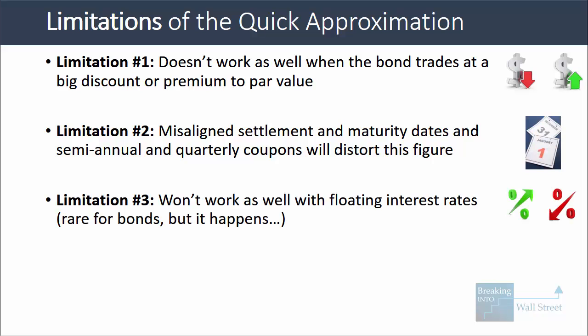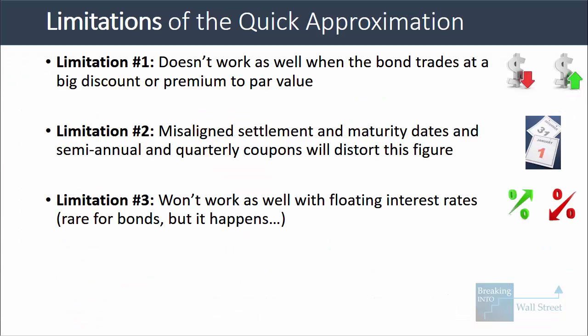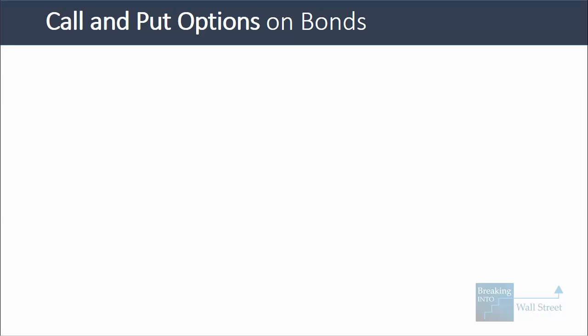One final limitation is if the bond has a floating interest rate rather than a fixed rate. So if instead of 5% we had LIBOR plus 3% or the US Treasury rate plus 1%, and the interest rate changes over time and you don't know what those changes will be, this approximation obviously won't work as well. Let's go into part three and look at how you could extend this formula to yield to call and yield to put on bonds.